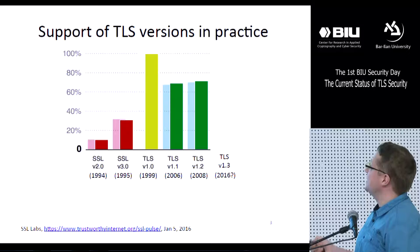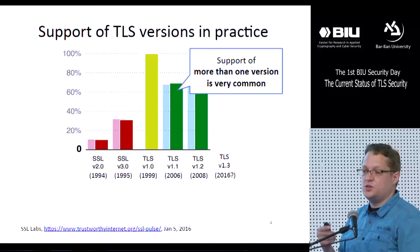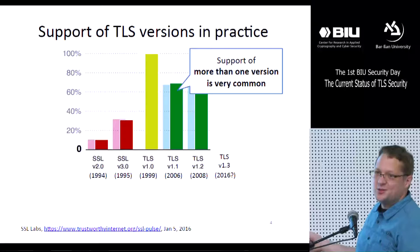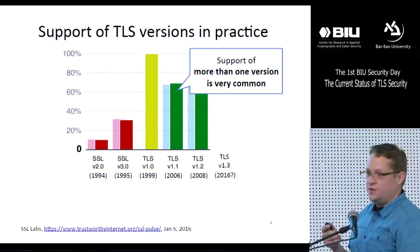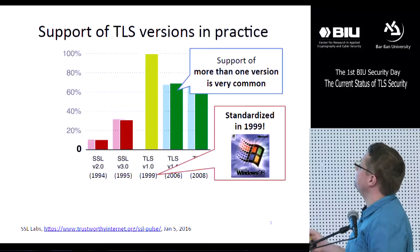There are two points on this slide. The first is that it's very common for a web server to support more than one version. A typical well-configured server that wants to maximize client compatibility would offer TLS 1.2, 1.1, 1.0, and all these versions. Once TLS 1.3 is finalized and published, it will very likely be offered in parallel with all these older versions.